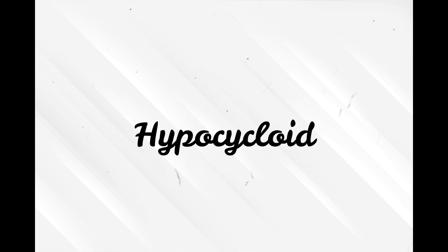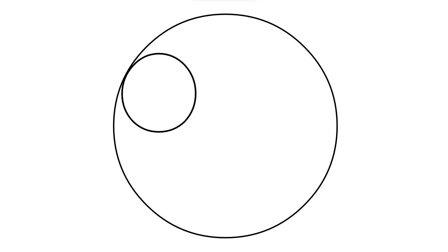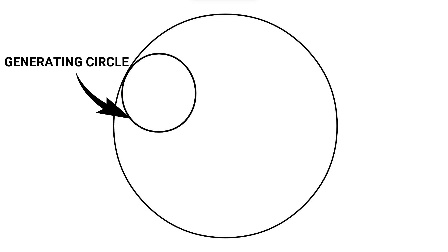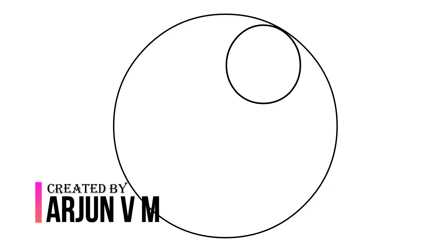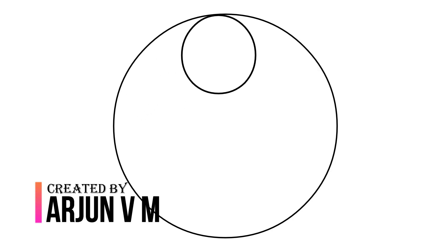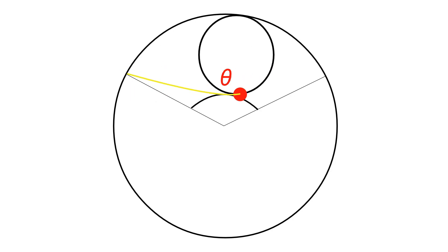Hello everyone, welcome to another video. Here we are going to see hypocycloid, which is generated by means of two circles — one of which is large and stationary, and another circle is small and rolling on the interior of the stationary circle. The stationary circle is called the directing circle and the rolling circle is called the generating circle. It is defined as the curve traced by a point on the circumference of the generating circle which is rolling.